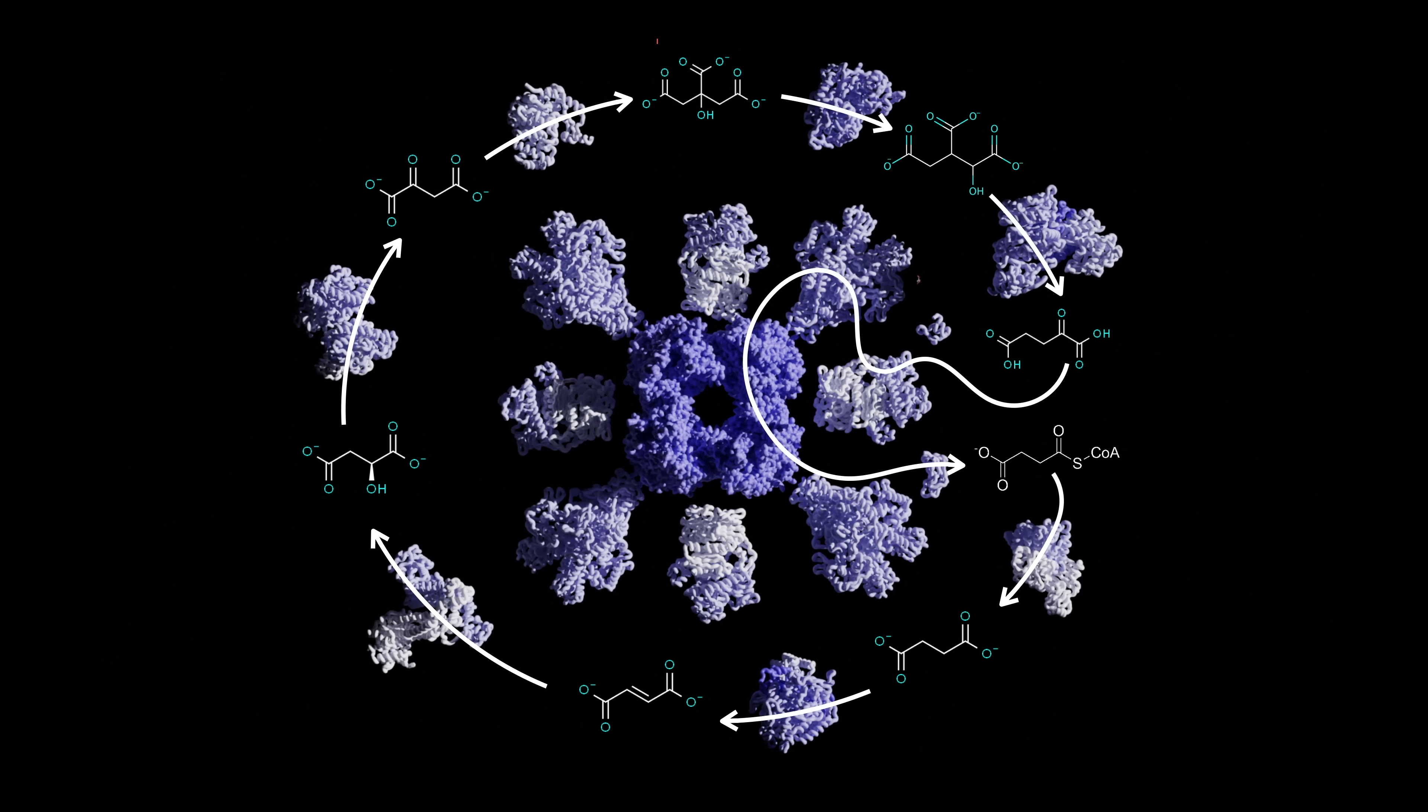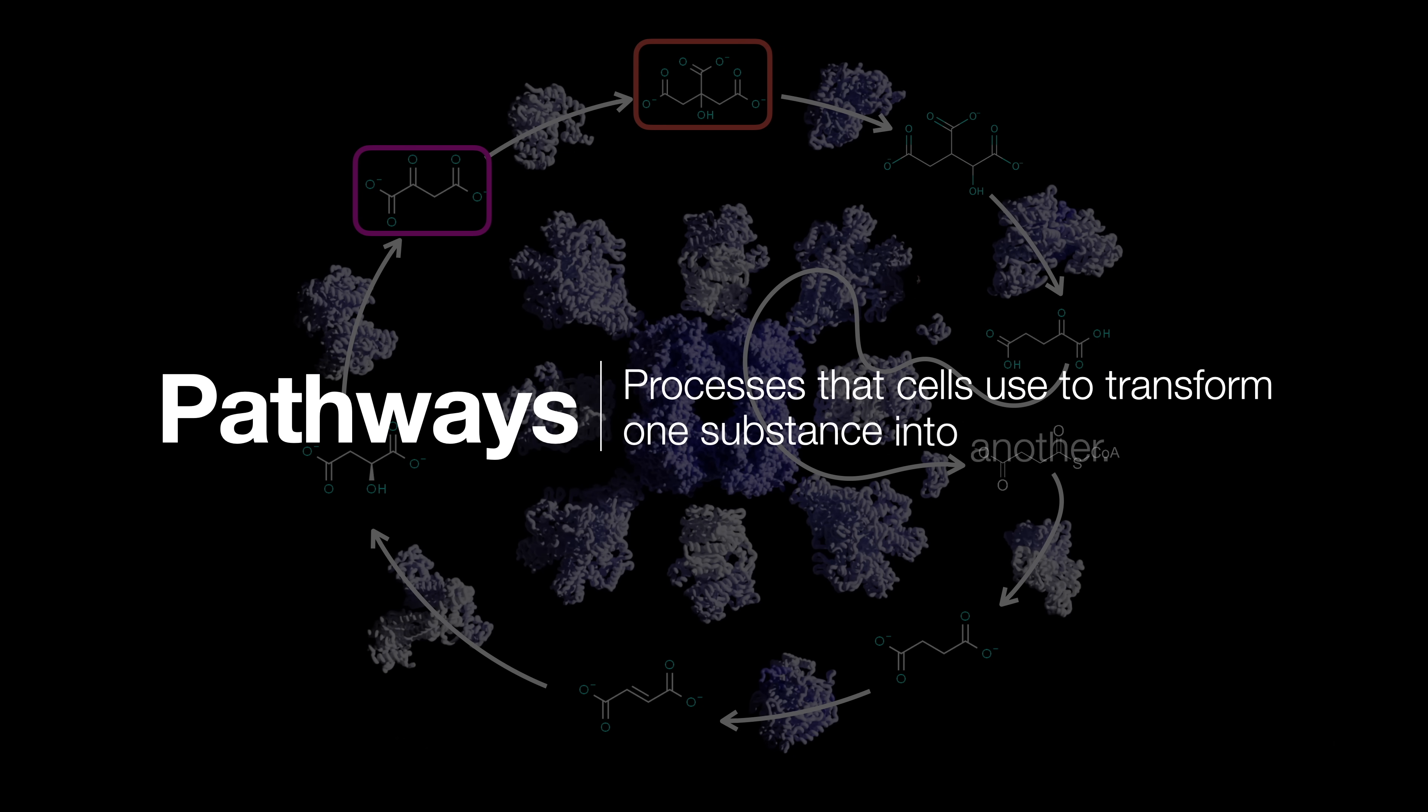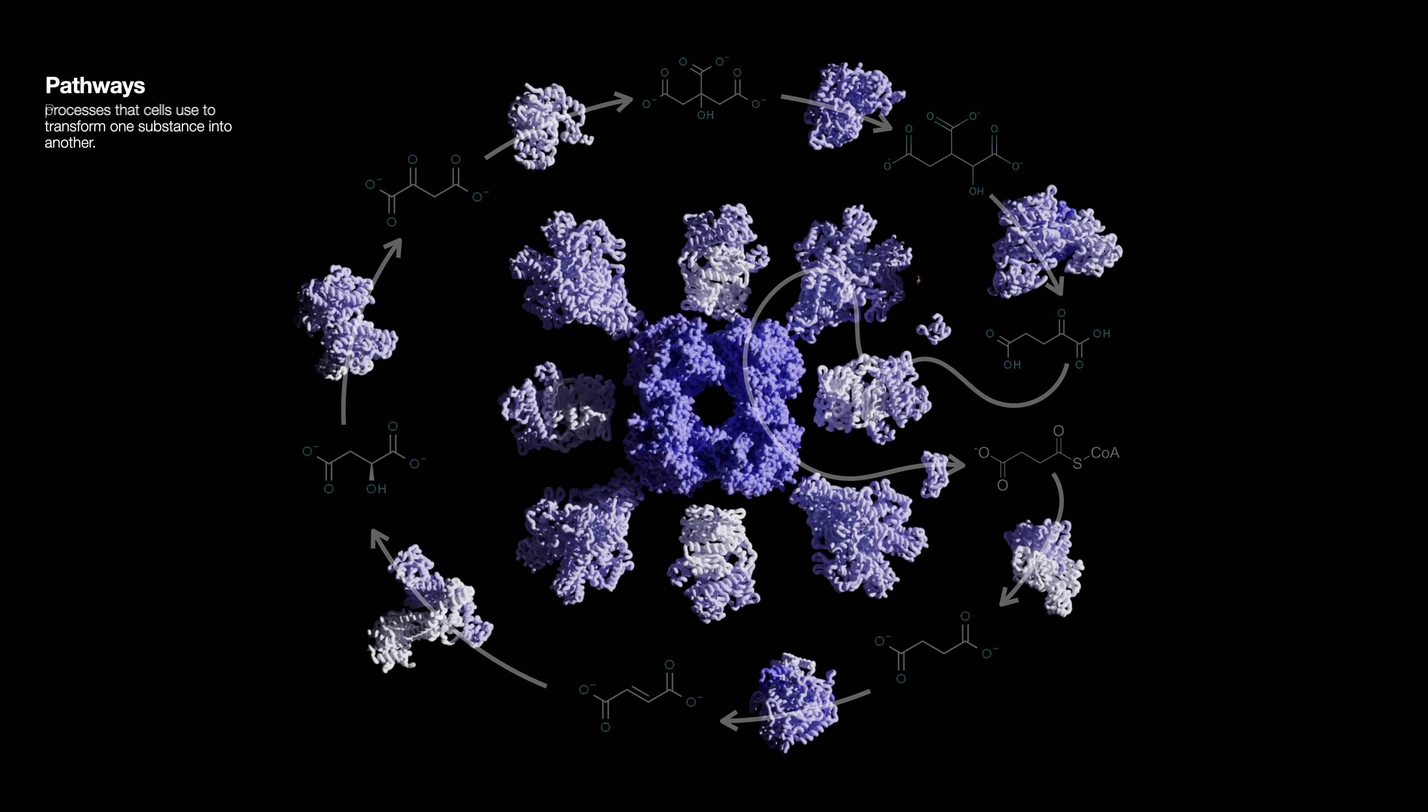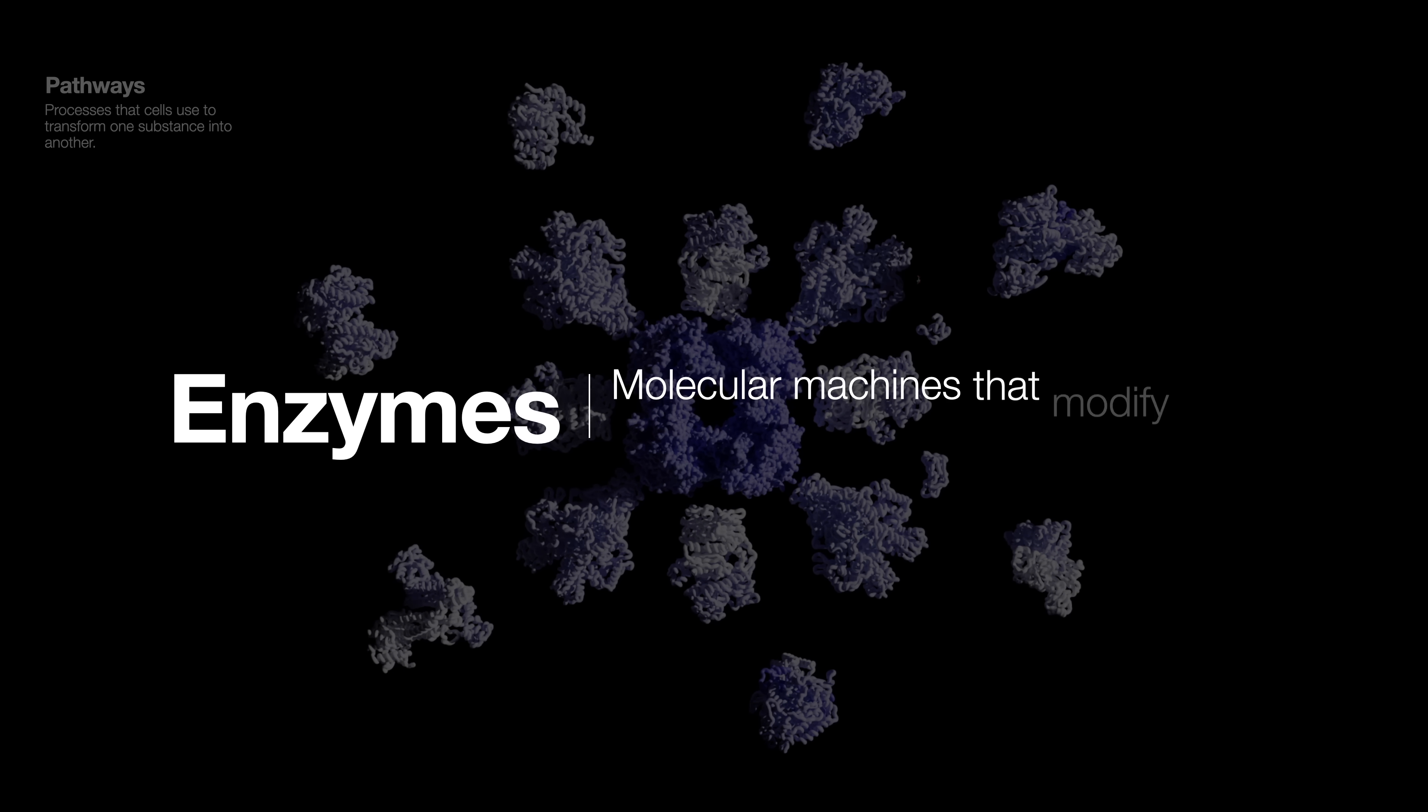Let's break this question down one step at a time. To be more specific, what I meant by programming language is the processes that cells use to transform one substance into another. These are what we call pathways in biology. And like factories, there are small machines along the way that gradually modify your starting material into your end product.